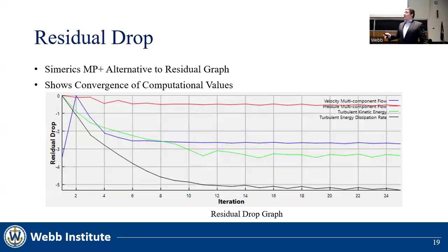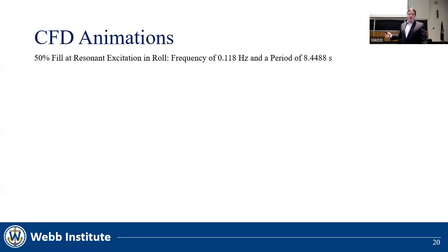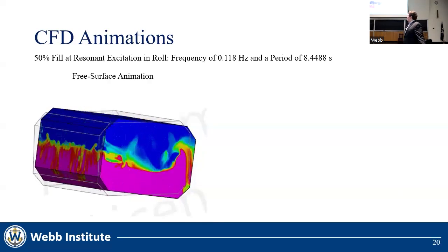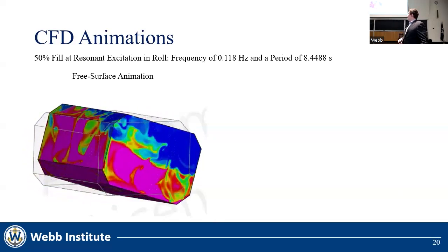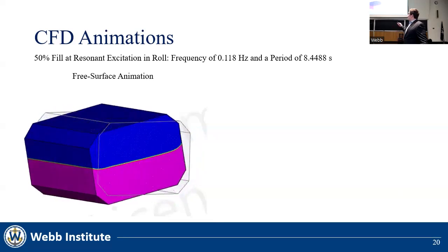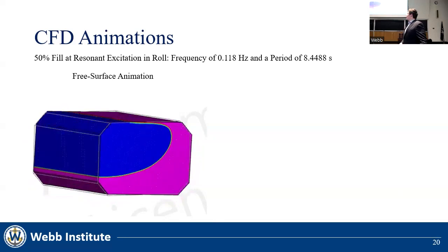Residual drop in Sumerix is used to show the convergence of the model. Seen here are velocity, pressure, turbulent energy, and energy dissipation in the test, which all show convergence as they flatten out. For the 50% fill level at a resonant excitation frequency of 0.118 hertz, or a period of 8.448 seconds: the pink represents the LNG and the blue represents the vapor, with any other colors being a mixture within that cell. You can see large amplitude excitations starting with a basic wave that becomes more and more violent as it grows, resulting in high impact pressures.